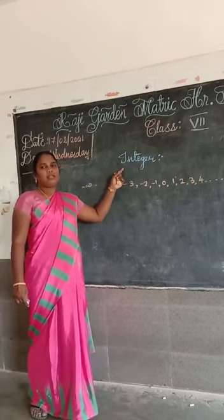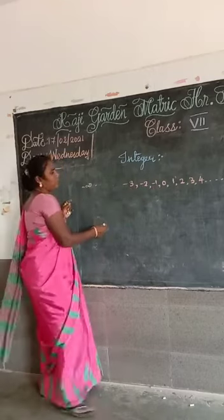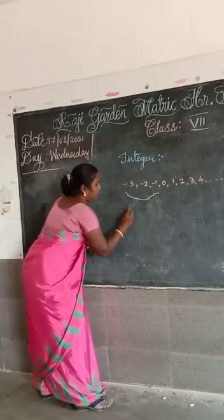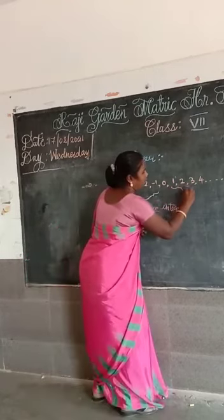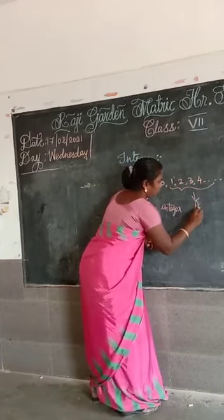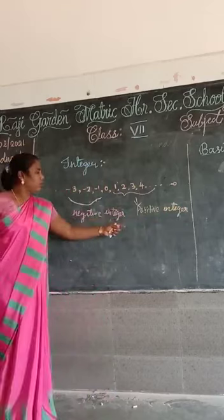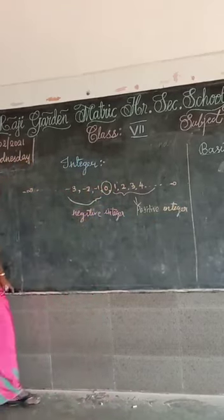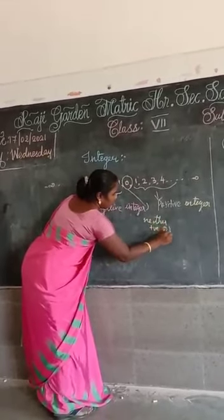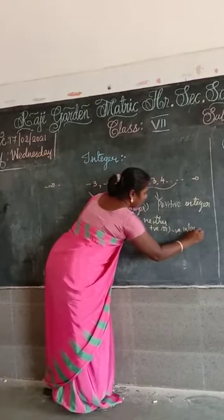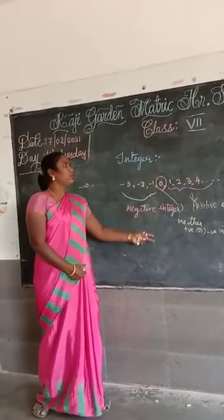What is meant by integer? The integer is nothing but negative integers and positive integers combined with zero — that is called integers. For example, you have negative integers and you have positive integers. The negative integers and positive integers combined with zero is called integers. Once again, the definition of integer is: negative integers and positive integers combined with zero is called integers.